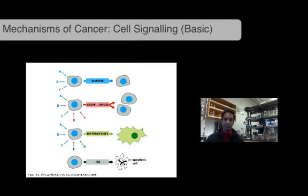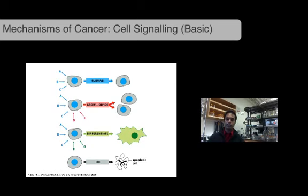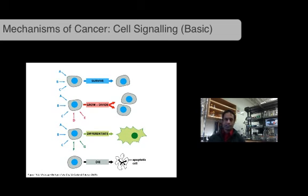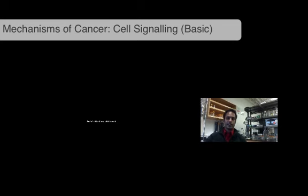Every cell is almost genetically identical in your body — there are some mistakes and differences — but the general fates are going to be: survive and not divide, which is the fate of most cells. Cells can also divide, which is happening right now in certain places like your brain and skin but not all over your body. Cells can differentiate — that's called G0. That green cell you see there is called G0; it is in a permanent state of arrest and is probably not going to divide ever again. Or of course, a cell can commit suicide, which we call apoptosis.